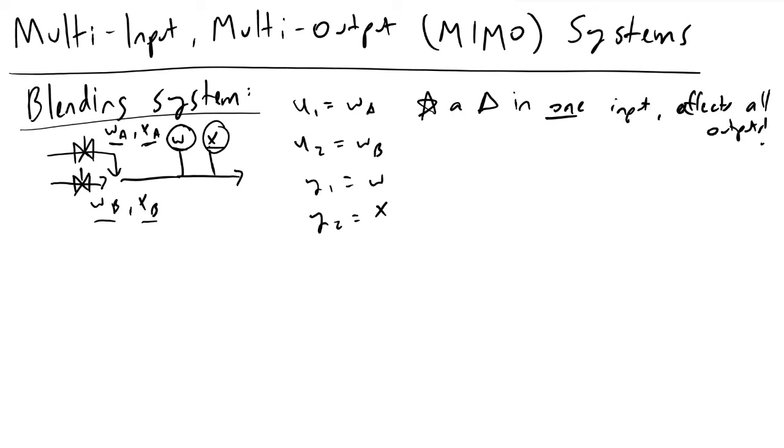This is where things begin to get a lot trickier, because in the past we've only had to worry about how one output will respond to one input, which means we need one transfer function. In this case, though, if we dial up just stream one, we're not only going to be affecting the outlet flow rate, but we're also going to be affecting the outlet composition x.